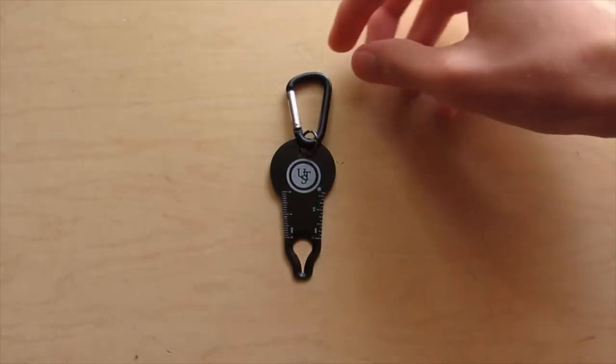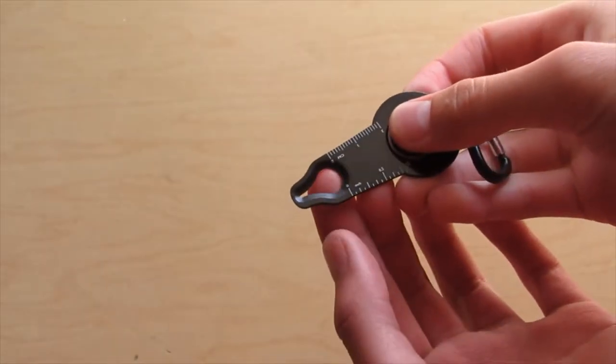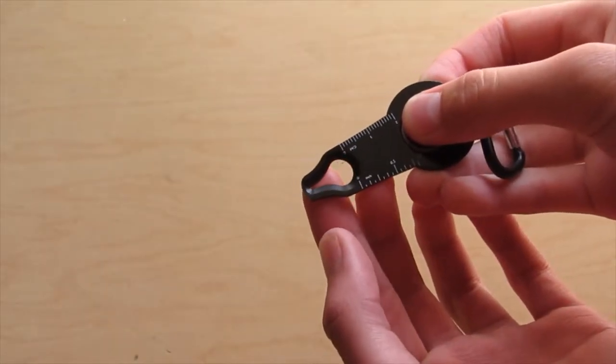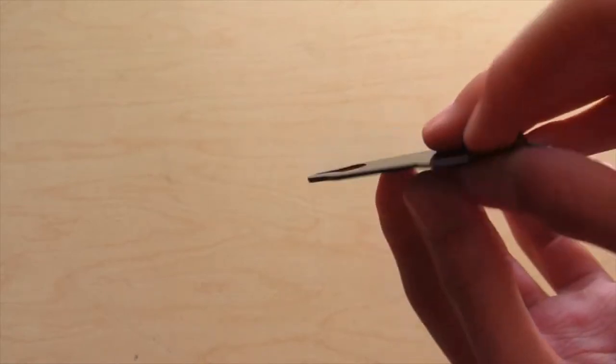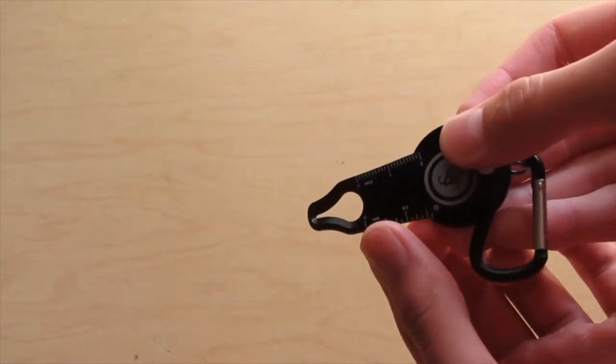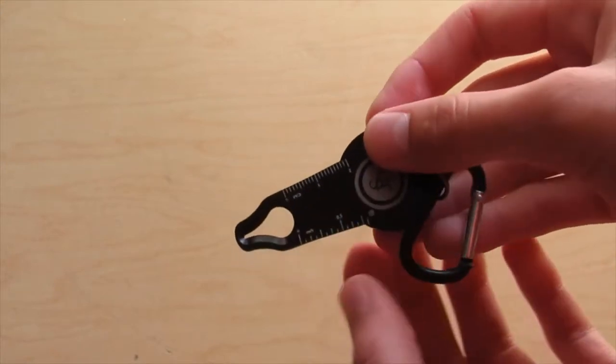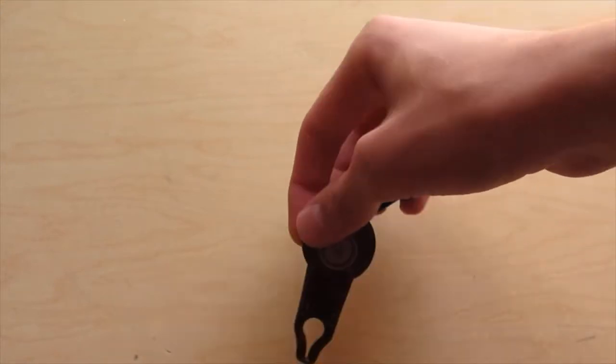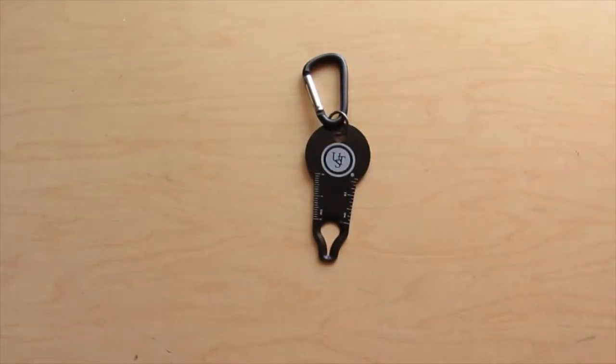But the whole idea of this is that you put it over top of where the tick is, and then you slide it back, and it pulls the tick off because the edges are kind of sharp. And it takes the tick out without hurting you or the tick, and then it has a standard and metric ruler on both sides so that you can measure the tick to help identify it.